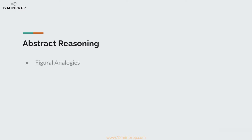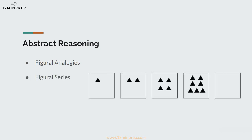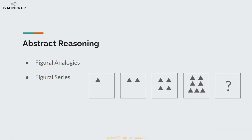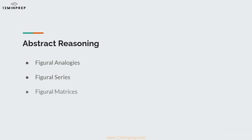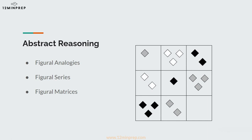Question types include figural analogies — these questions will present you with an analogy of two figures and then a third figure, and you'll need to figure out what comes next in the analogy. Figural series — these questions will present you with a sequence of figures and shapes with one space left blank, and you will have to choose which shape or figure fits into that blank space. Figural matrices — these questions will present you with a 3x3 set of 9 squares with shapes and figures in 8 of the boxes, and you will have to figure out the pattern to determine what the missing shape or figure will be to complete the matrix.